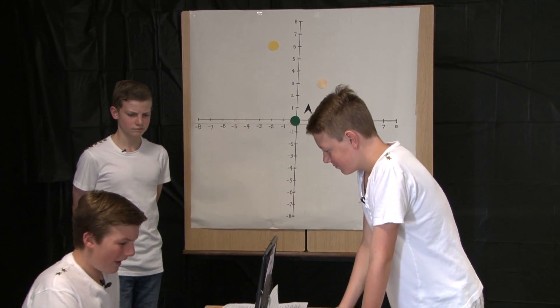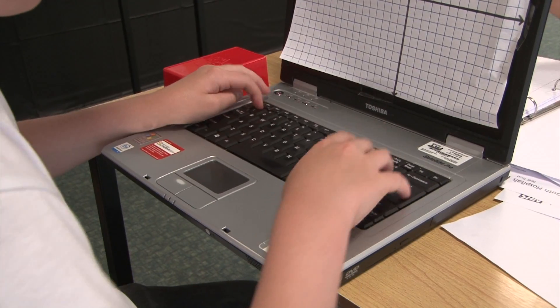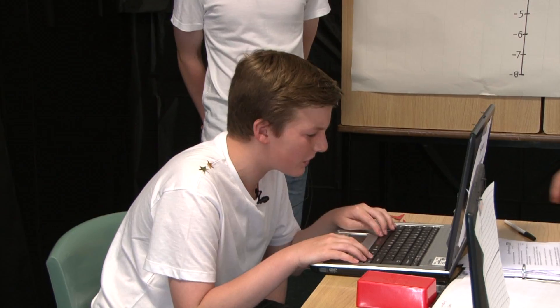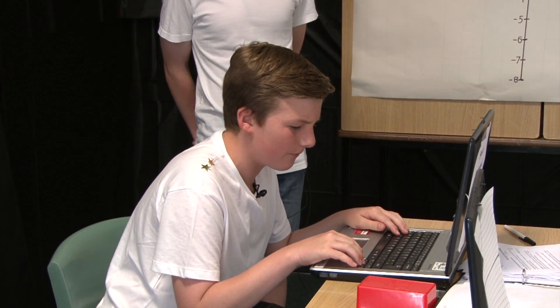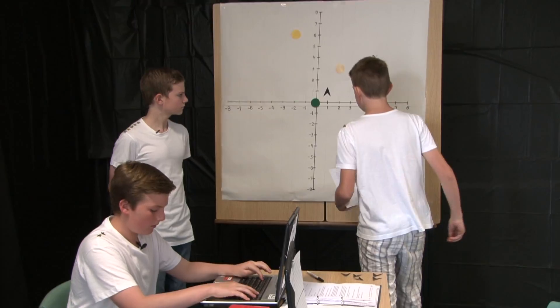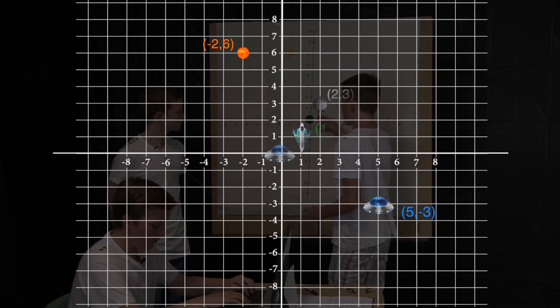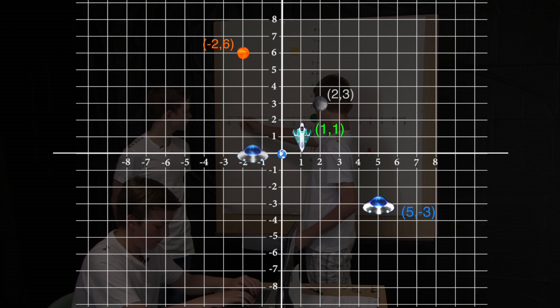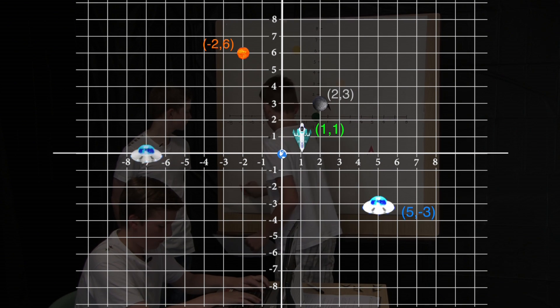Oh no. We have another UFO with the positions of minus seven minus seven. Adding that one now sir. Starting at the origin, moving seven places to the left and seven places down.